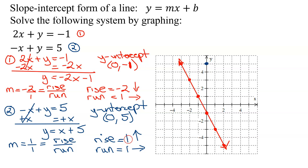My slope is 1, so up 1 over 1 — I go up 1 to the right 1. To get points going back the other way, you reverse: go down and to the left, down and to the left, down and to the left. There's my other line. Let me draw that one in, and don't forget we always put arrows on both ends.